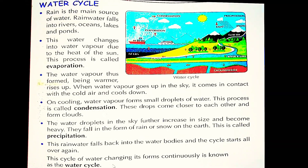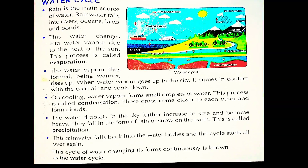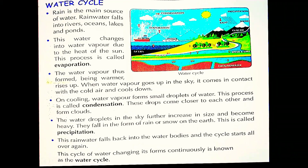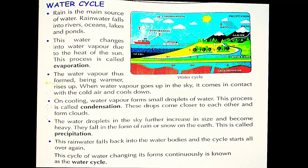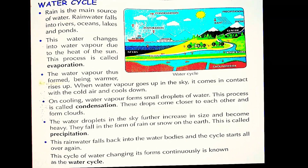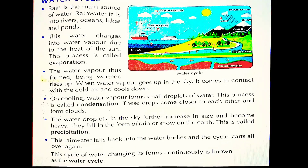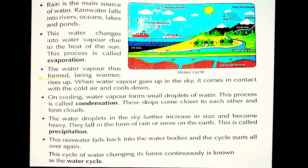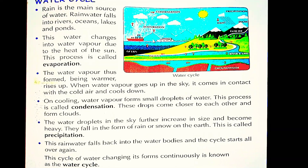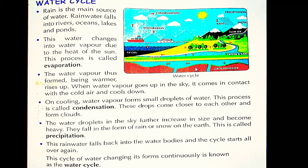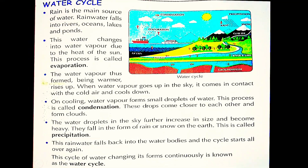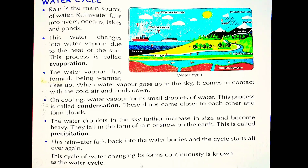Ye water cycle hume aasaani se kahan dekhne ko milti hai? Jahan par ped-paudhe zyada lagaye ho. Ped-paudhon se bhi baarish ho sakti hai — isliye to hum kehte hain 'Vriksh lagao'. Un pedon se bhi paani chhoota hai, unki patiyaan bhi baaf banke udne lagti hain, aur fir wohi process chalu ho jaata hai. It is the most easiest way — jahan par ped honge, wahan par baarish zyada hogi.